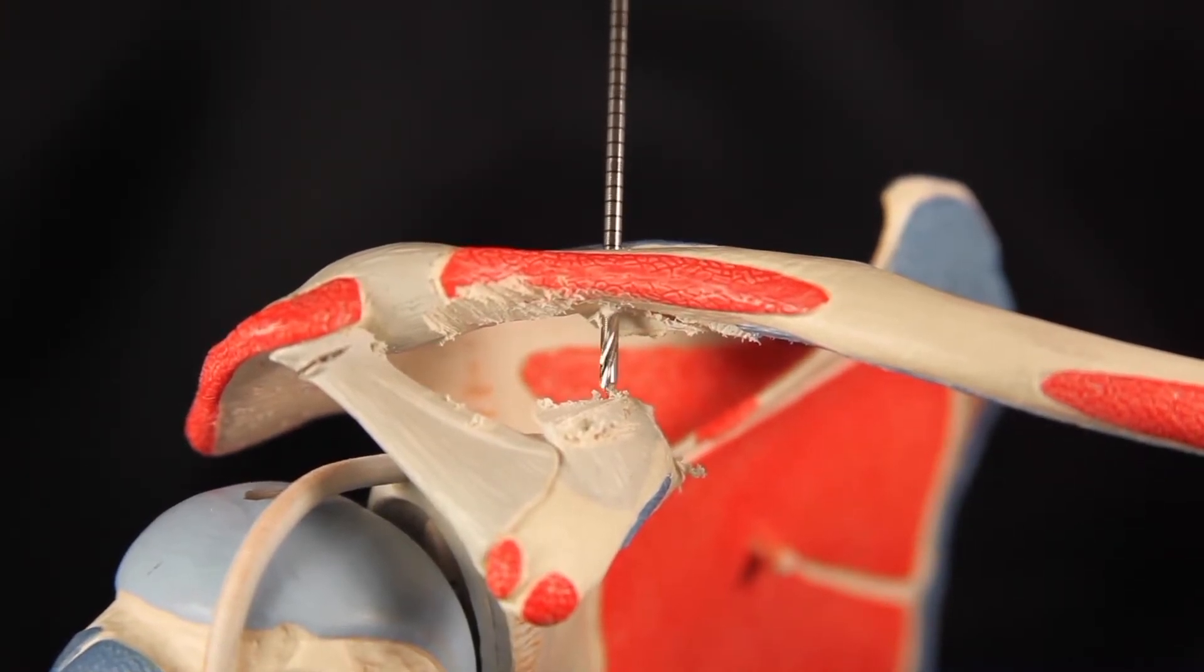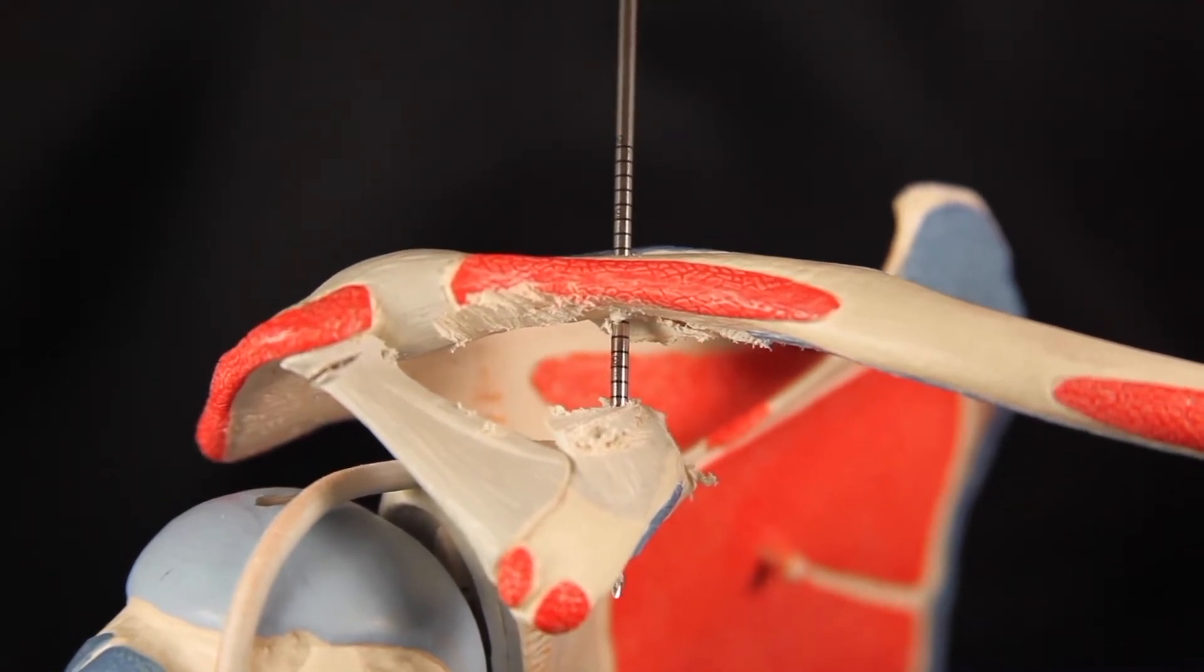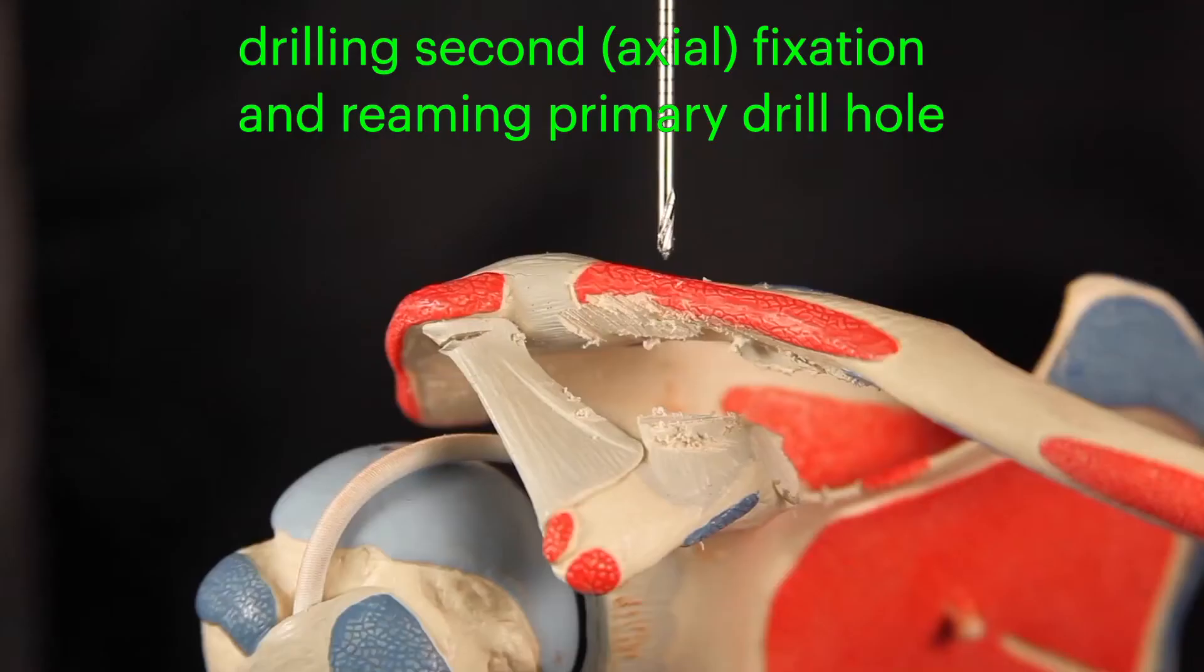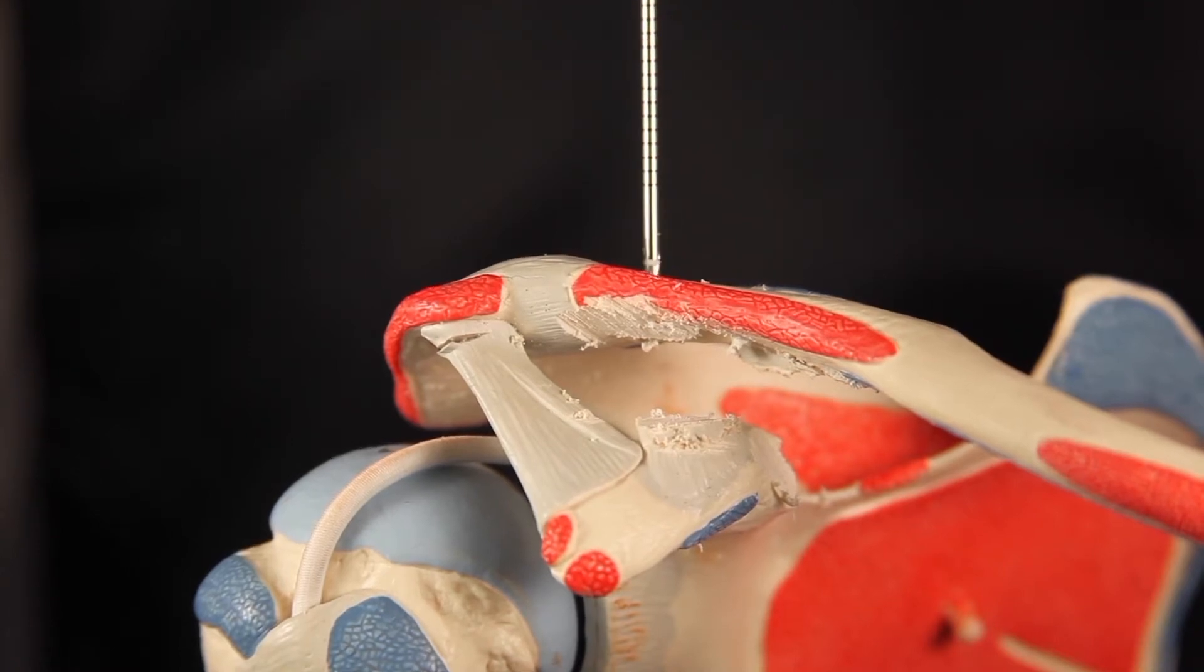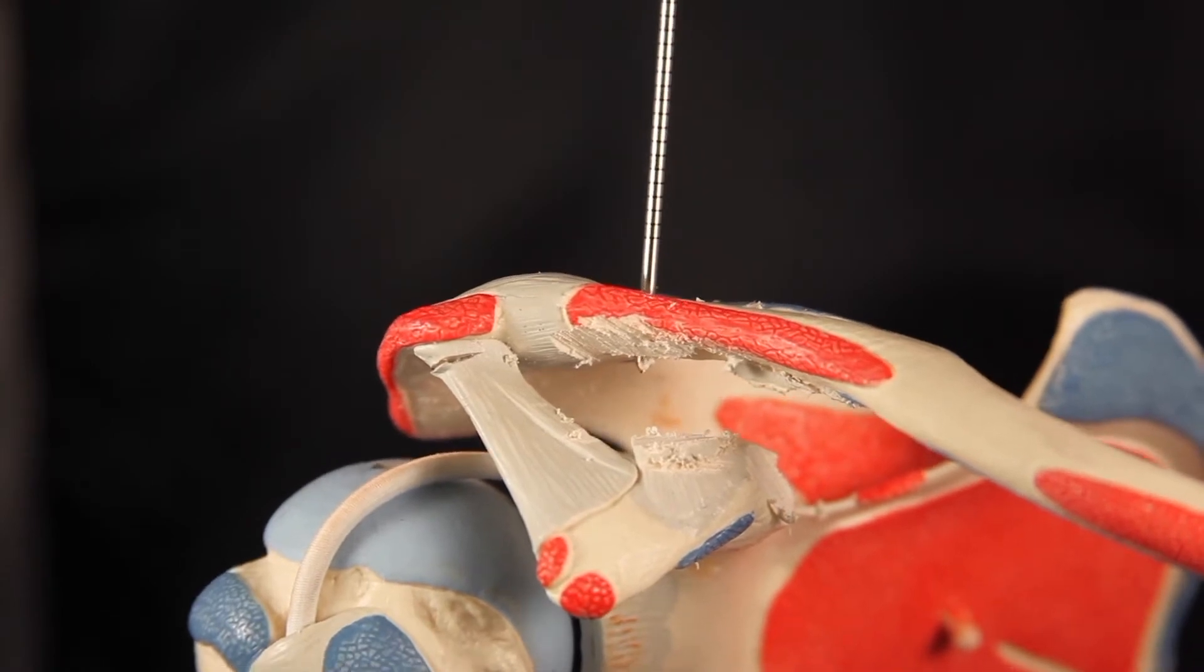It is important to make sure that the drill hole is aimed to the exact center of the coracoid under direct vision, then can be drilled through the coracoid. A second 2.4 millimeter drill hole is made approximately 15 millimeters lateral to the initial drill hole for placement of the axial fixation. This drill hole only goes through the clavicle.